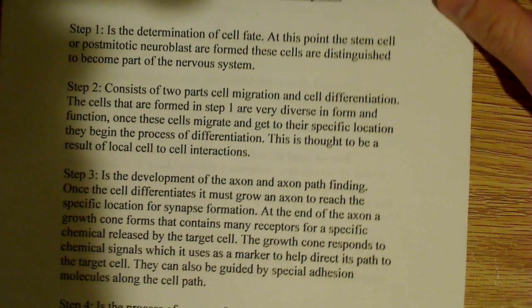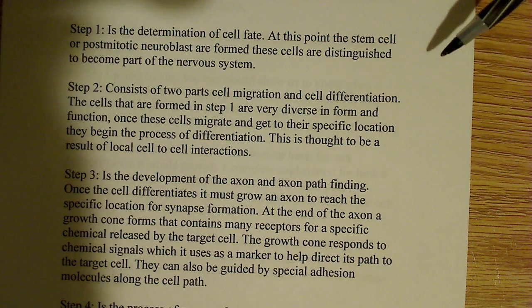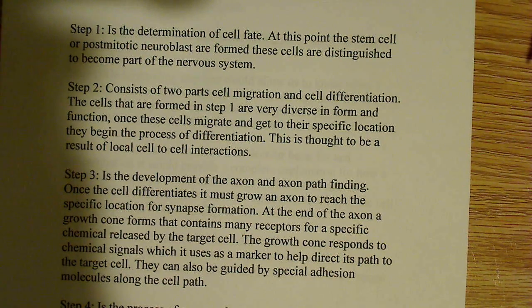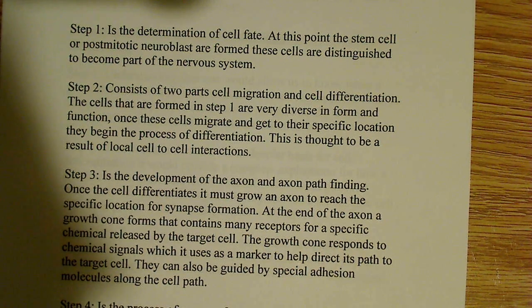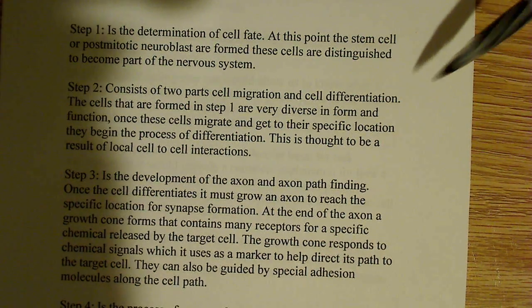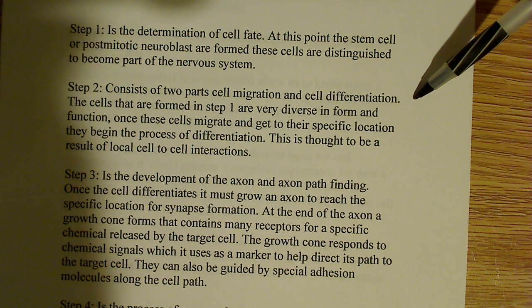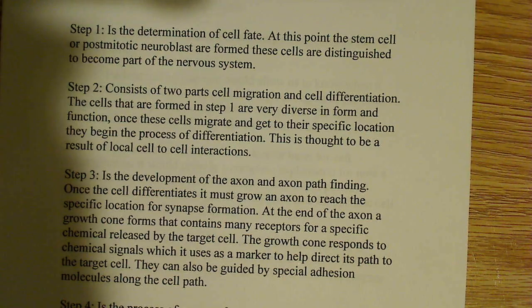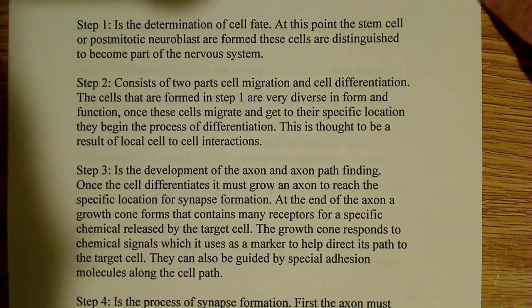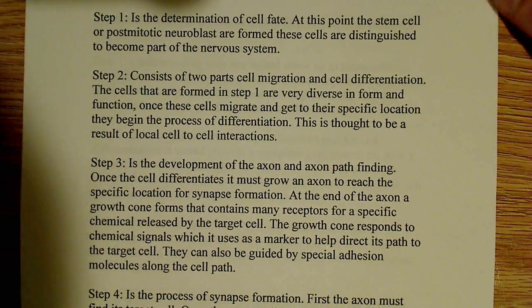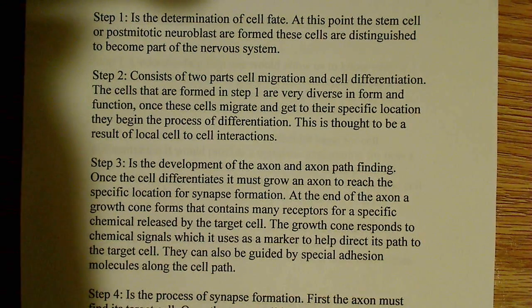In step two, it actually consists of two parts: cell migration and cell differentiation. The cells that are formed in step one are very diverse in form and function. A stem cell can develop into any type of cell — it hasn't totally differentiated into the proper cell yet. That starts to happen in step two, where once these cells migrate and get to their specific location, they begin the process of differentiation.